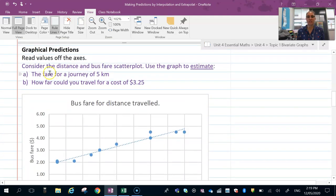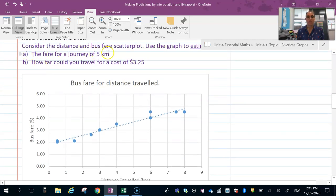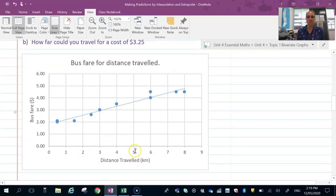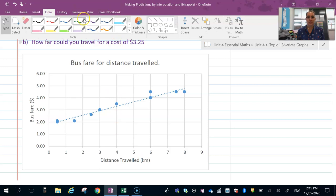When we use graphs, we're just going to read the values off the x-axis. Consider our bus fare and distance scatter plot. Use this graph to estimate the fare of the journey for five kilometers. Five kilometers is along the x-axis. I'm going to use a green pen to help identify that. I would just draw up a line and read it off the graph.